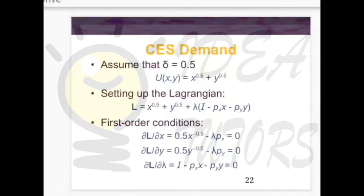Now let's look at another utility function. As we have done already, we take the utility function x^0.5 plus y^0.5 and write it as is, put a plus sign, then lambda times I minus px*x minus py*y. This is the Lagrange equation, and lambda is the Lagrange multiplier. We then find three equations by taking partial derivatives of L with respect to x, y, and lambda.